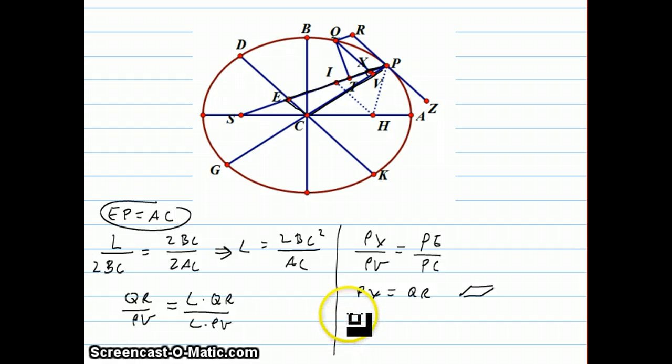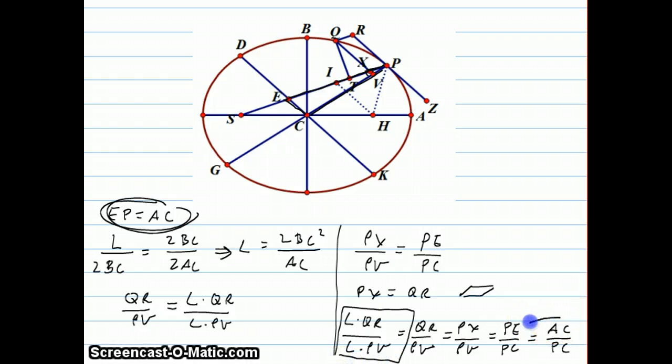So now we can put this all together to say that L times QR over L times PV is equal to QR over PV. But QR we established is equal to PX over PV. But PX over PV we've established is equal to PE over PC. But since PE is equal to AC, we get his first major conclusion: AC over PC.